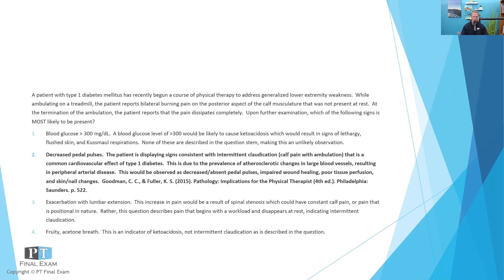Spinal nerve root compression is unlikely, so option three — exacerbation with lumbar extension — is not the correct answer since that positional component is not described in the question. Back to the correct answer: decreased pedal pulses. This represents the cardiovascular and the metabolic-endocrine systems interacting — type 1 diabetes leads to atherosclerosis of the large vessels, resulting in both coronary and peripheral arterial disease, claudication, skin and nail changes, absent or decreased pedal pulses, and poor wound healing. There's a lot of crossover across systems with type 1 — and really type 2 — diabetes.